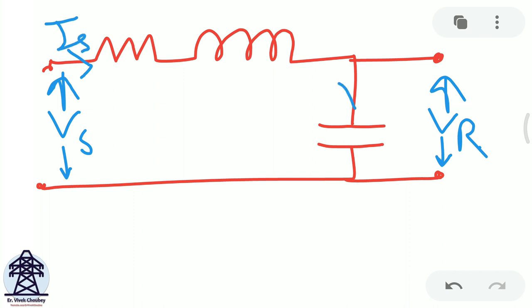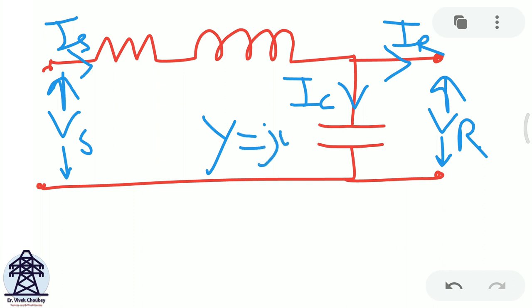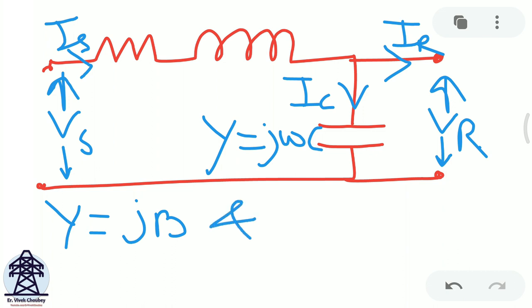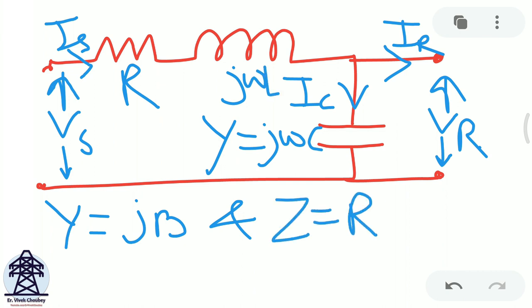In this model, the sending end current IS splits into IC, the line charging current going into the capacitance, and IR, the receiving end current going into the load. The capacitance is referred to as shunt admittance Y = jωC = jB, where B = ωC. The series resistance and inductance together form the series impedance Z = R + jωL.